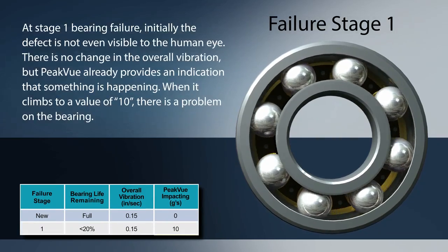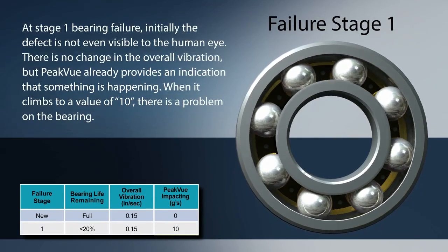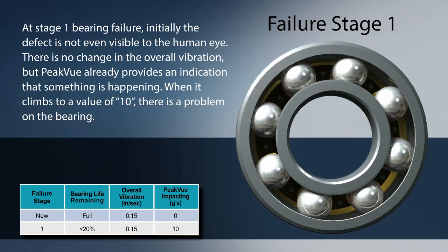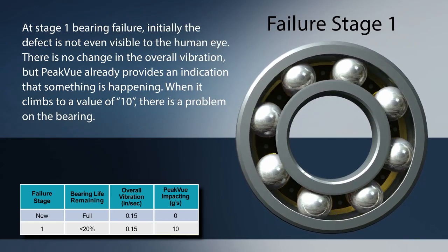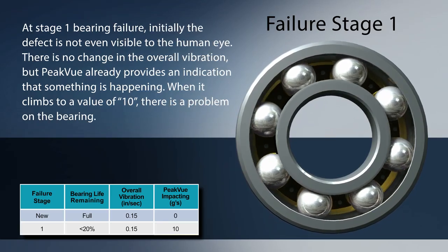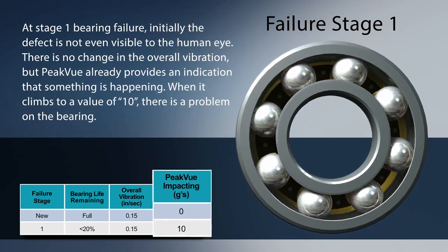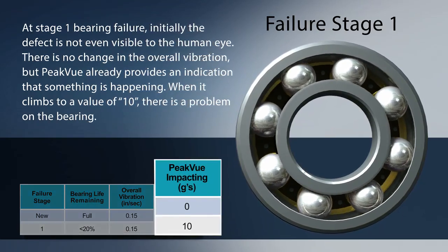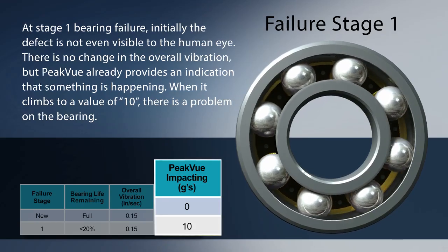At stage one bearing failure, initially the defect is not even visible to the human eye. There is no change in the overall vibration, but peak view already provides an indication that something is happening. When it climbs to a value of 10, there is a problem on the bearing.